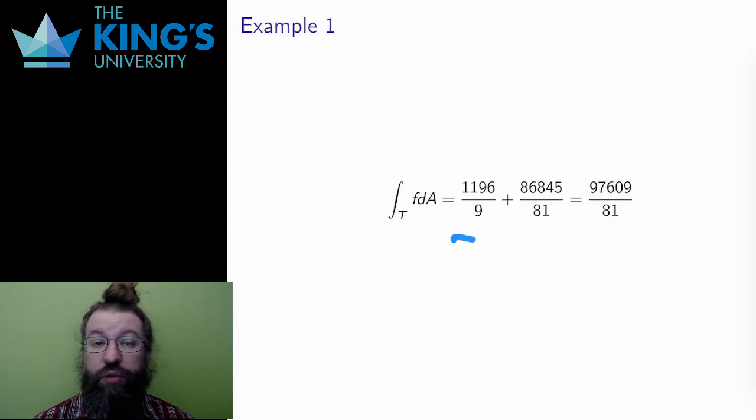Then the integral is the sum of the two values, which produces this final result for the volume over the triangle of this particular function.